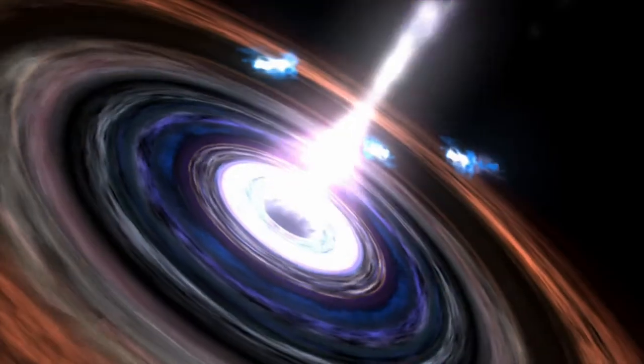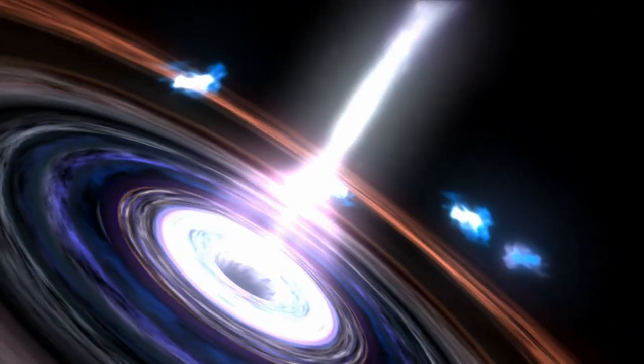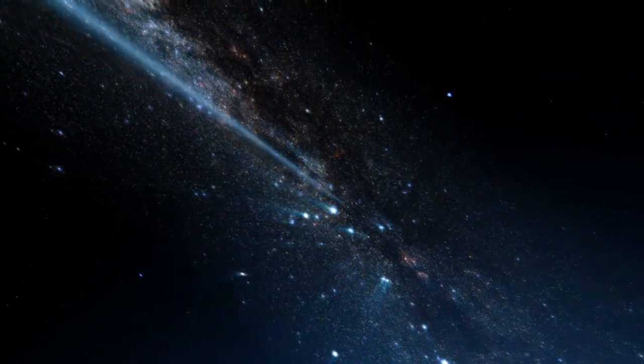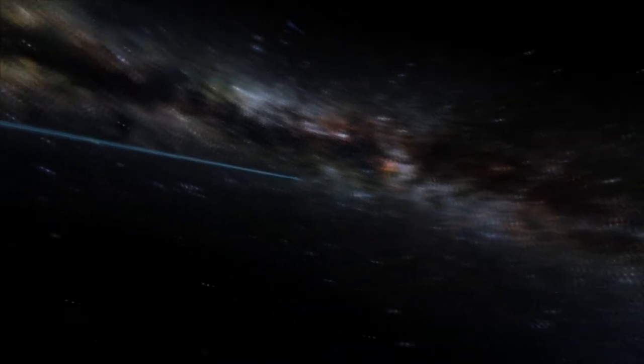Centaurus A, Cygnus A and Virgo A are all giant galaxies that pour out huge amounts of radio waves. Each galaxy is powered by a massive black hole at its center. Some of these radio galaxies and quasars are so powerful that their signals can still be detected from a distance of 10 billion light years.